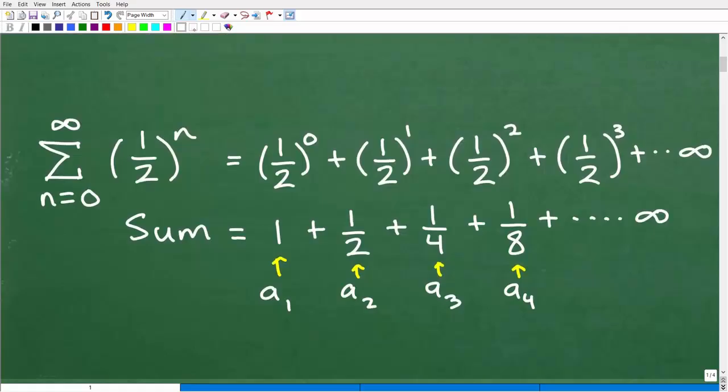What does this notation mean? For those of you that are new to series and sequence, if you're brand new to this stuff, this might be a little bit on the advanced side. This notation is called sigma, it just means add up.